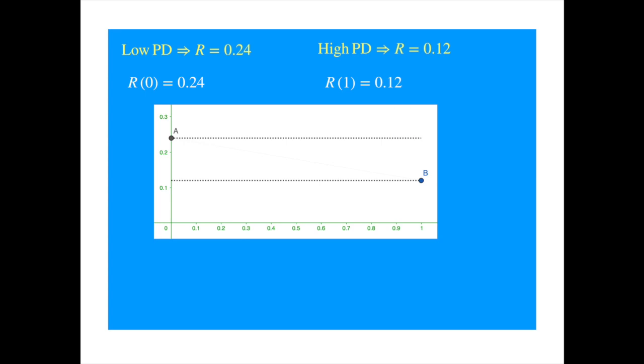Now, we can plot R as a function of probability of default. The x-axis represents the probability of default, and the y-axis represents R. We can plot the two points. Now, we can fit some sort of line through these two points. For example, we can assume a linear relationship. Remember, the intercept plus slope times the value. So, we get a straight line linking the two points. The intercept is at 0.24, and the slope is negative 0.12.